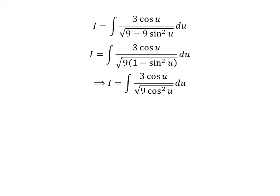We know the famous trigonometric identity: 1 minus square of sine of u is equal to square of cosine of u. So I is equal to the integral of 3 times cosine of u upon square root of 9 times square of cosine of u.